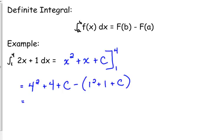So 4 squared is 16 plus 4 is 20. So we've got 20 plus C for the first part minus 1 squared plus 1 is 2.